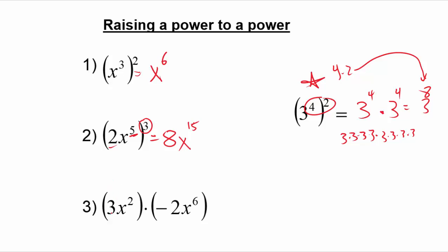For number 3, look carefully — we multiply to get negative 6, and looking at the x's it's tempting to say x to the 12th. However, notice there's no exponent on the outside of the parentheses raising anything to a power. This is actually a review problem from part 1: we have to add the exponents instead of multiply. So the answer is negative 6x to the 8th.